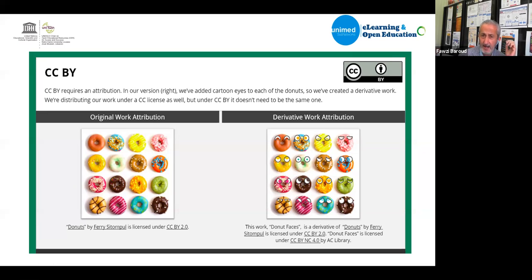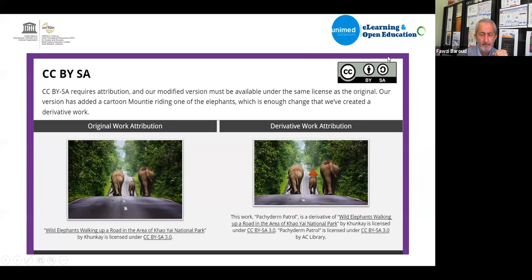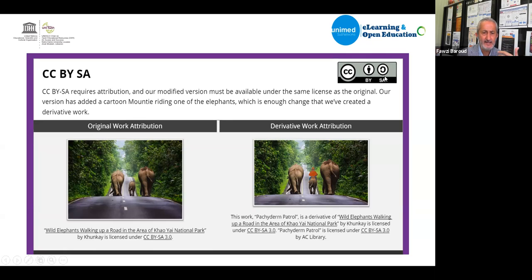With CC BY-SA (Share Alike), you can take the image, make derivative work, change the color, add elements — but when you redistribute it, you cannot change the license. You must keep the original license as-is. With CC BY-NC (Non-Commercial), you can use and modify the resource but cannot make money from it — for example, you cannot print a bird picture on a t-shirt and sell it to students.